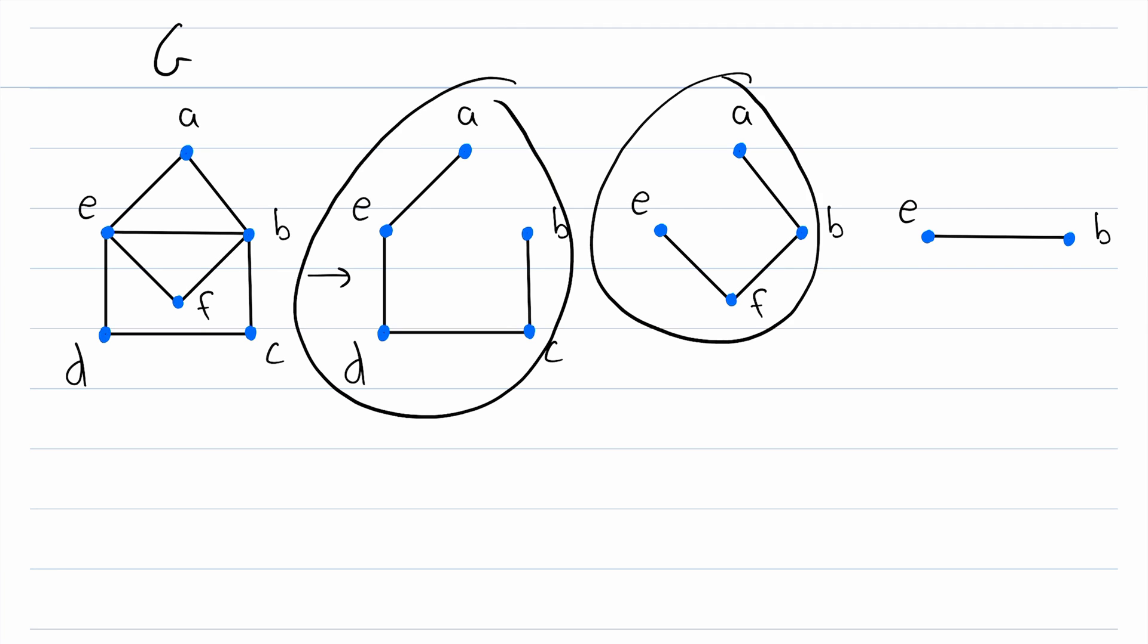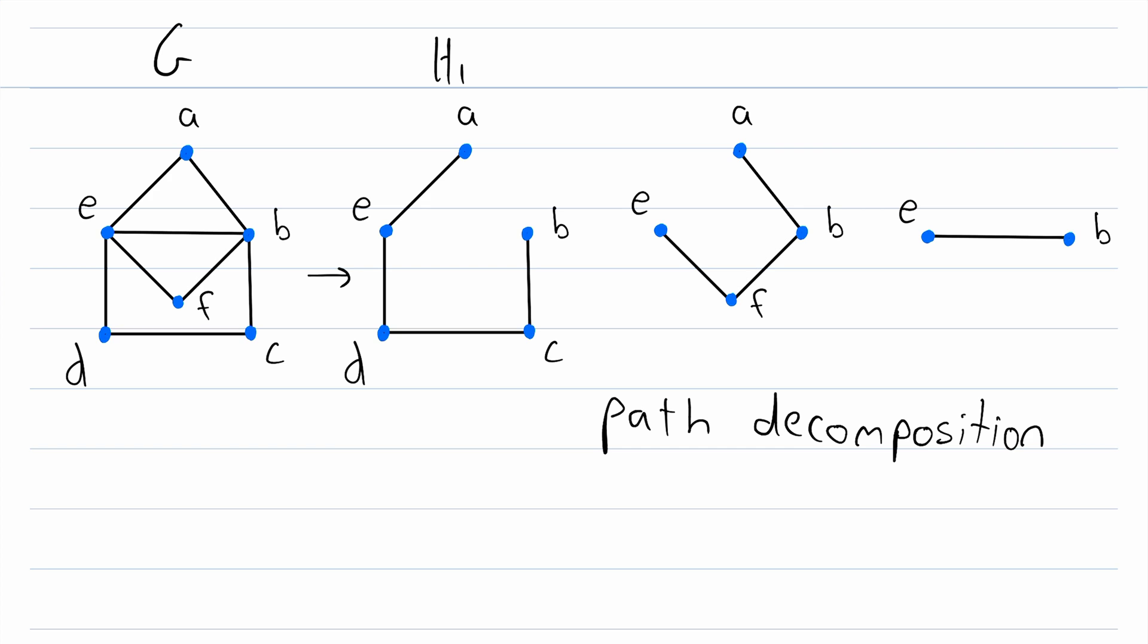And since all of these subgraphs are path graphs, we could call this a path decomposition of G. So if we called these subgraphs H1, H2, and H3, we could say that the set containing H1, H2, and H3 is a path decomposition of G.